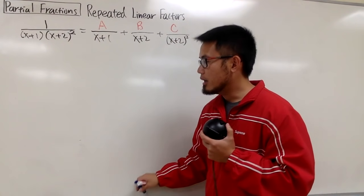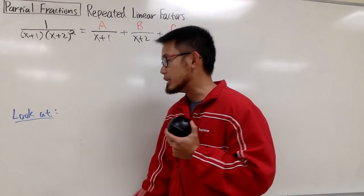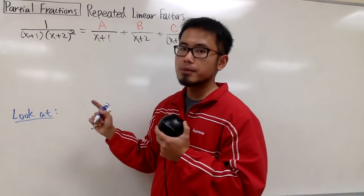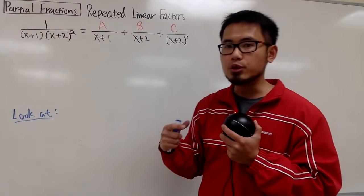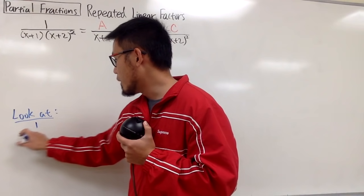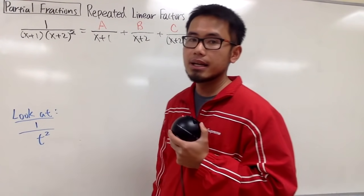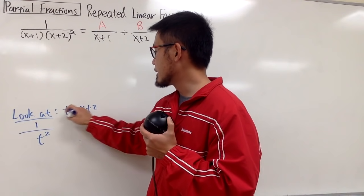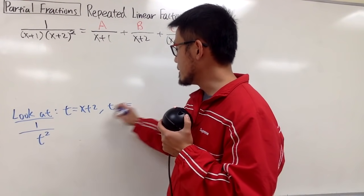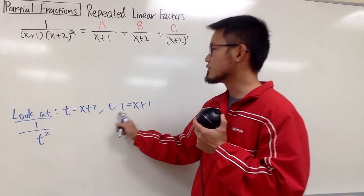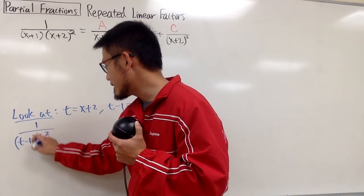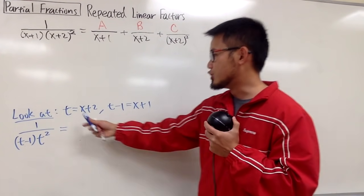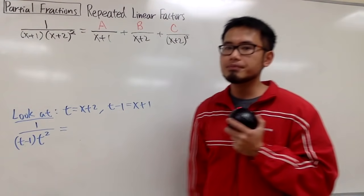To explain why we build up the powers, let me consider the following. We have (x+2) squared in the denominator. I'll call x+2 a new variable t, so we're looking at 1 over t squared. Since t equals x+2, then t minus 1 equals x+1. So the situation with x is similar to the situation with t, based on this change of variable. Now here's the interesting part of the explanation.